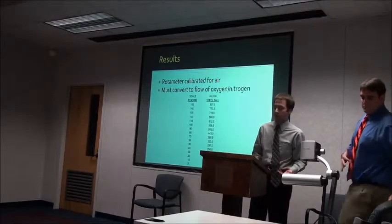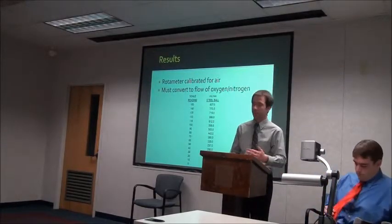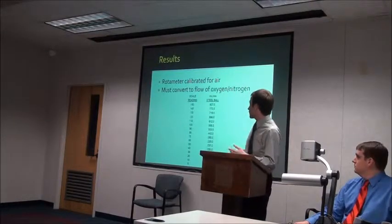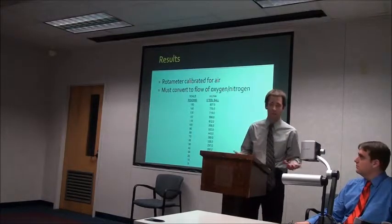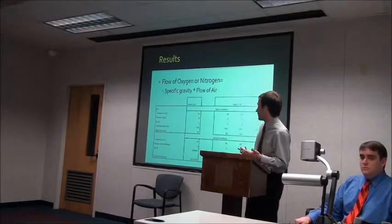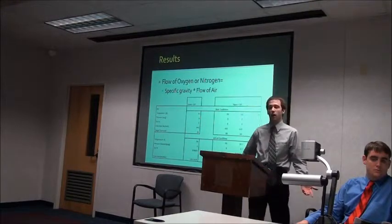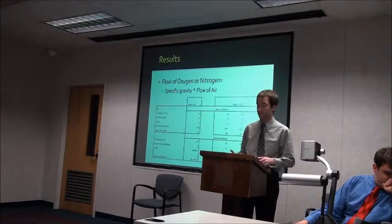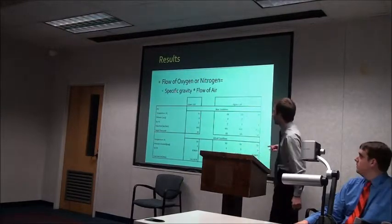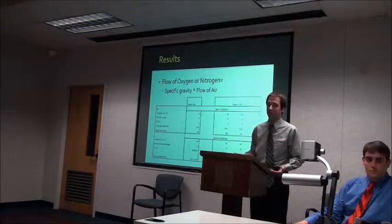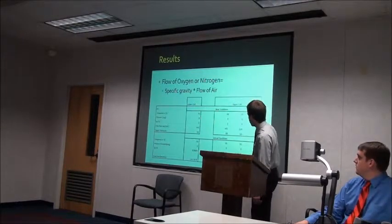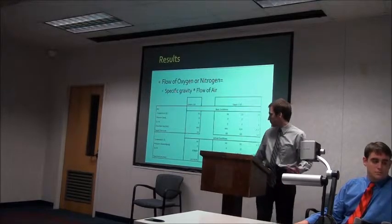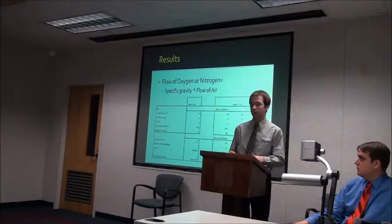In order to get the volumetric and mass flow rate, we had to convert from the rotameter, which is calibrated for air at 70 degrees Fahrenheit and zero PSIG. Since we were flowing pure oxygen or pure nitrogen, we had to calibrate accordingly. Fortunately, our base conditions for temperature and pressure were the same as our operating conditions, so the only thing that varied was specific gravity. The actual flow rate is proportional to the square root of the specific gravity of the substance. Since nitrogen has a specific gravity less than one, when we read an example flow rate of 146, the actual flow rate was lower at 141.